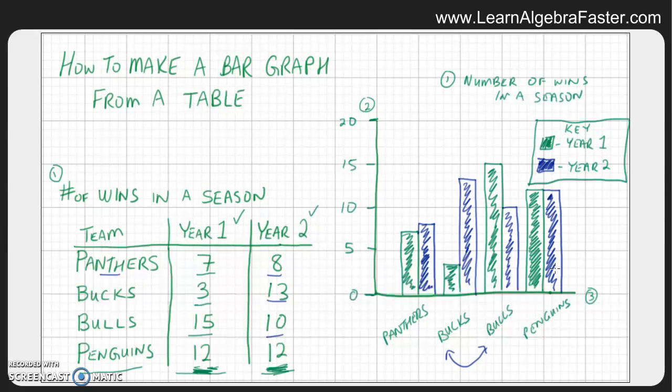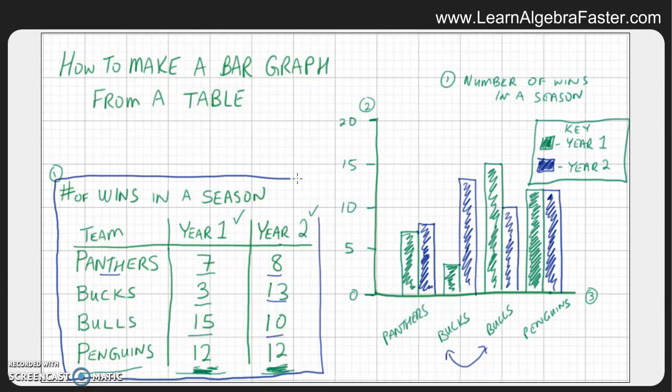So there you have it. We took the information in this table and we just showed how to make a bar graph from that table. Again, the key points are the title, the vertical axis, the horizontal axis, and the key. With those four parts of data, you can make any bar graph.